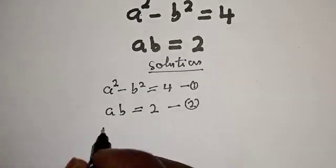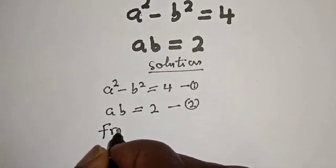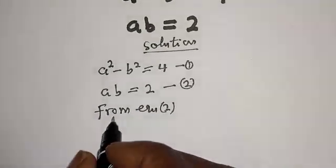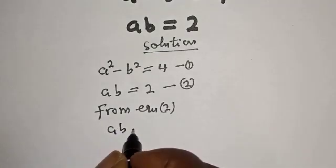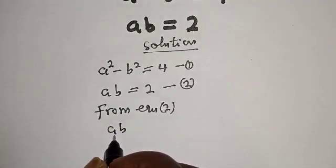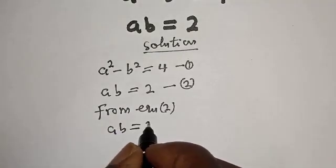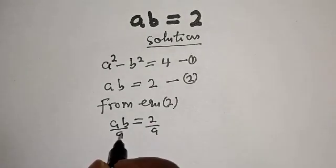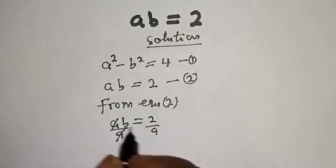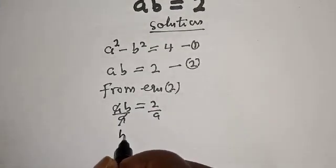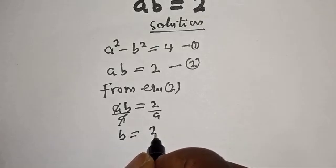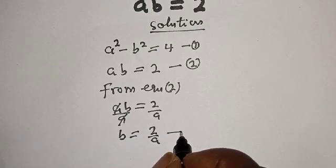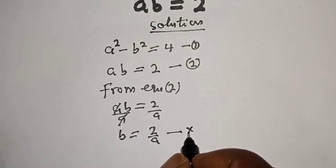Now, from equation 2, let's make b the subject of the formula. So ab is equal to 2. Dividing both sides by a, a cancels, giving us b is equal to 2 over a. Let's call this equation star.